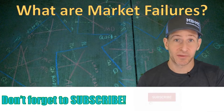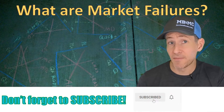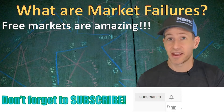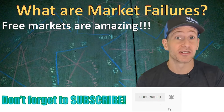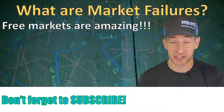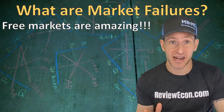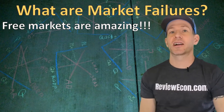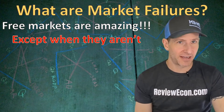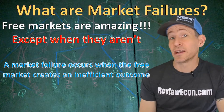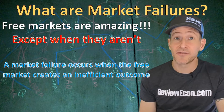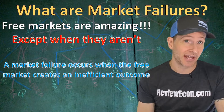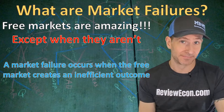So far in this class, we've been learning about how amazing free markets are. They are very efficient at allocating our scarce resources when there are no externalities and those markets are competitive. But today we're going to talk about market failures. Market failures occur when a free market fails to achieve an allocatively or socially optimal outcome.